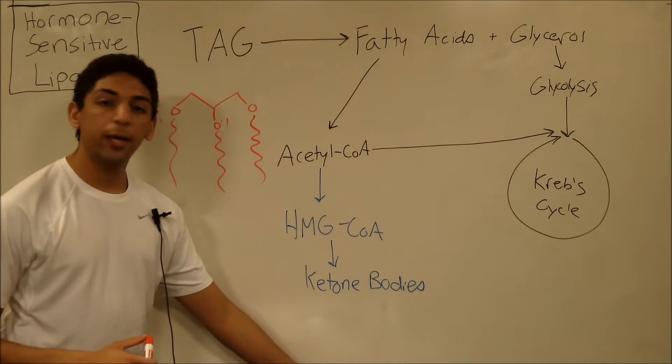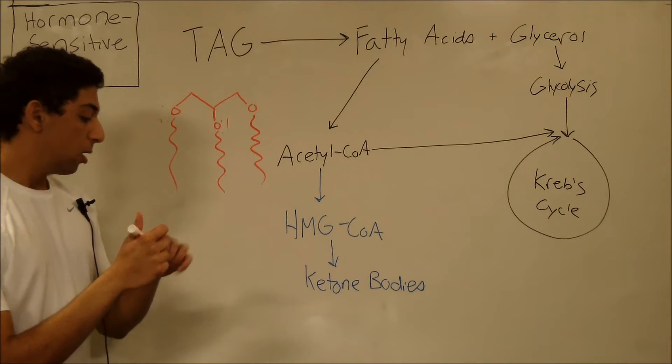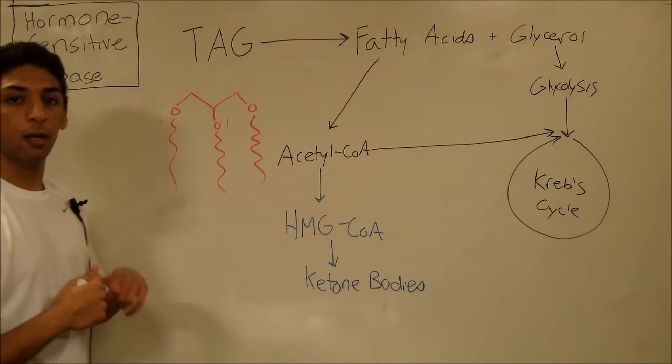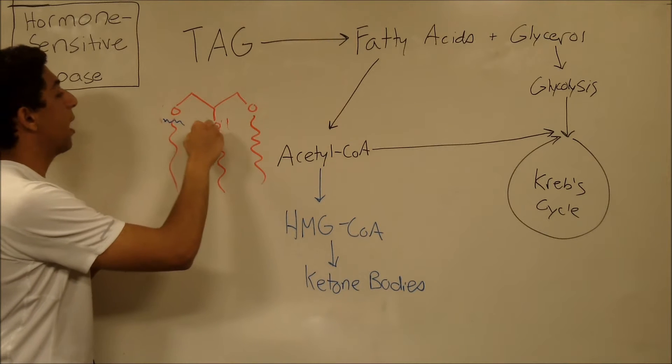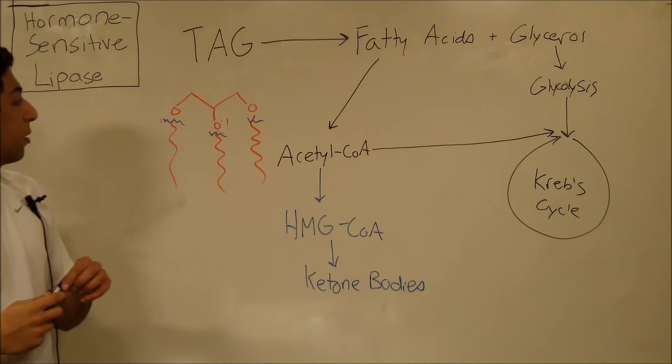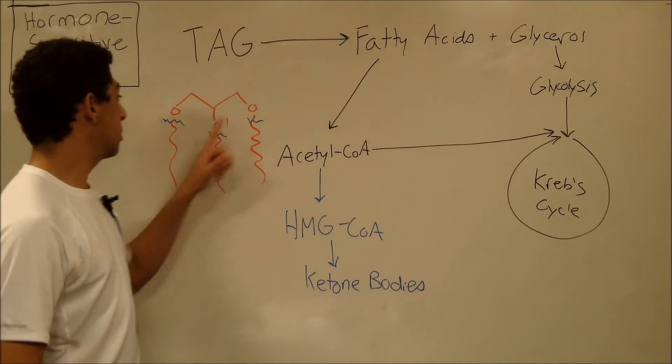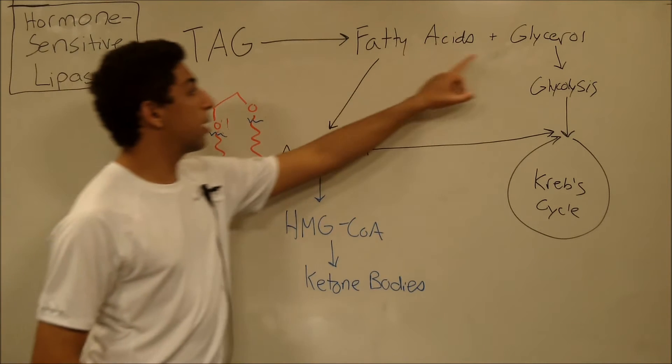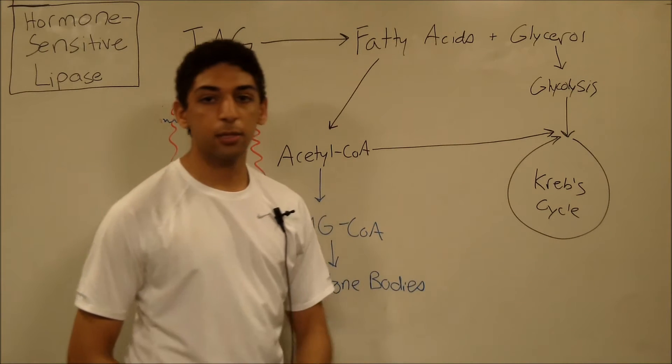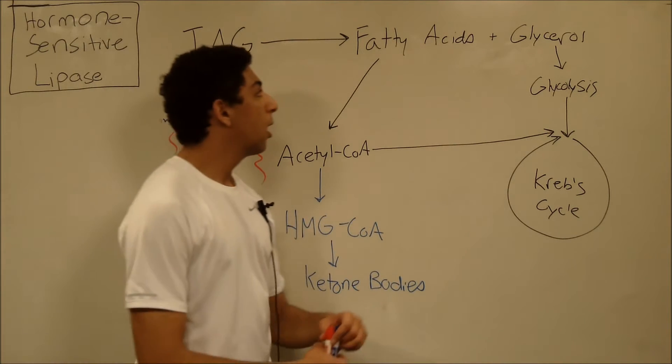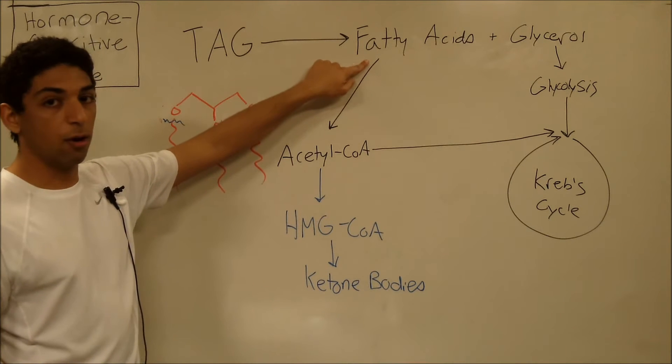So when we're breaking these down, because today we're going to be talking about breaking TAGs down, the first step is you have to separate the glycerol from the fatty acids. So we chop off the acyl groups. And we get three fatty acids, which are just these three tails. And we get a glycerol. The glycerol goes into glycolysis, just like glucose into the Krebs cycle. And you guys know that. That's not on this test. So that's just a side note.